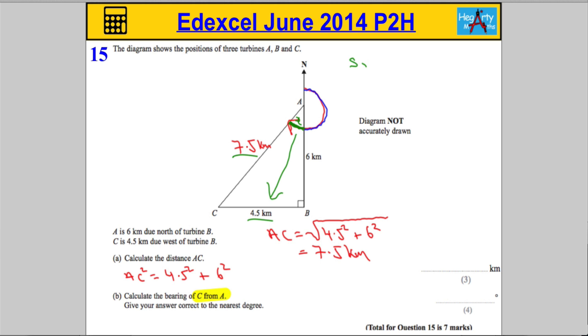So, I know that the sine of the angle X is equal to the opposite, 4.5, over the hypotenuse, 7.5, which means that X is going to be found by doing the inverse sine of 4.5 over 7.5.